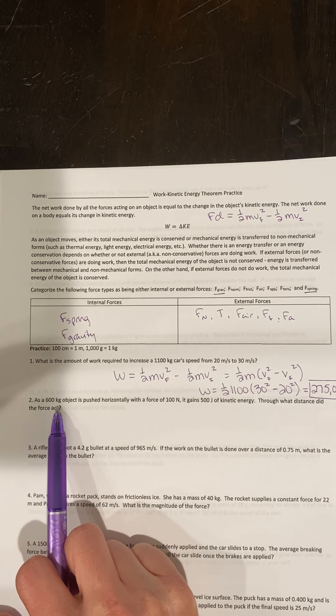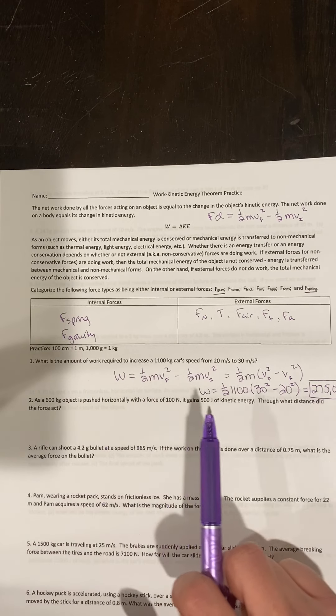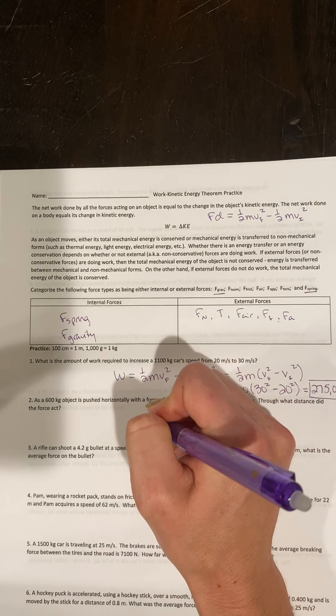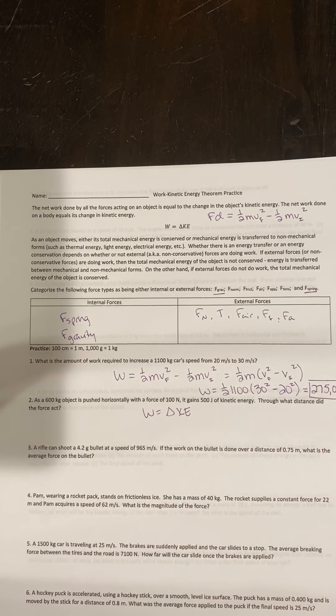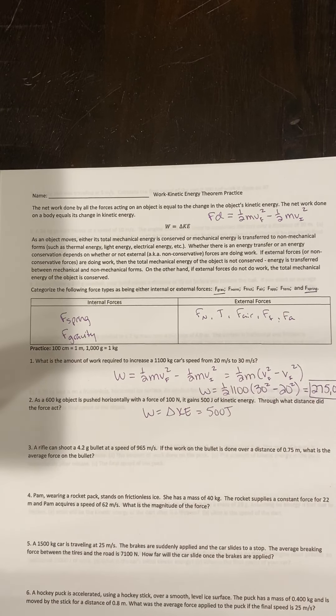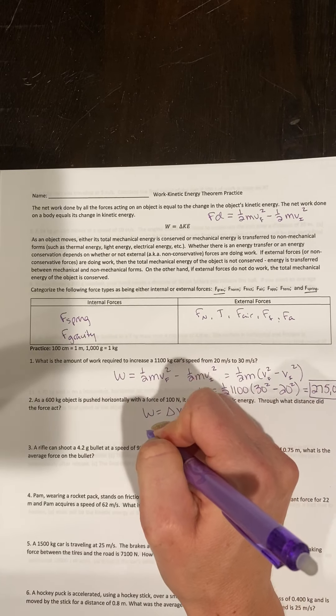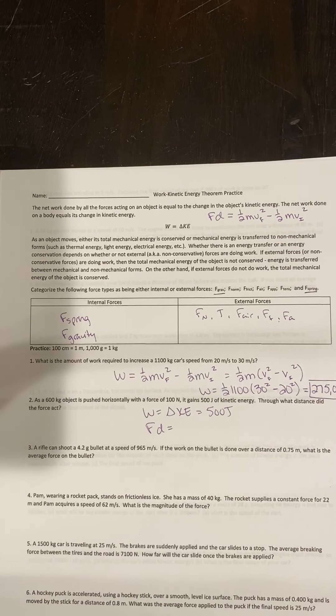A 600-kilogram object is pushed horizontally with a force of 100 newtons and gains 500 joules of kinetic energy. Through what distance did the force act? So my work is equal to my change in kinetic energy. The change in kinetic energy is 500 joules. And I've been given a force, so my force times my distance is equal to 500 joules.